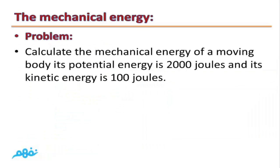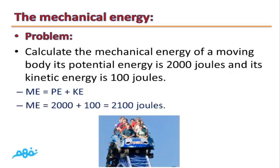Problem: Calculate the mechanical energy of a moving body whose potential energy is 2000 joules and kinetic energy is 100 joules. Mechanical energy equals potential energy plus kinetic energy, which equals 2000 plus 100, equals 2100 joules.